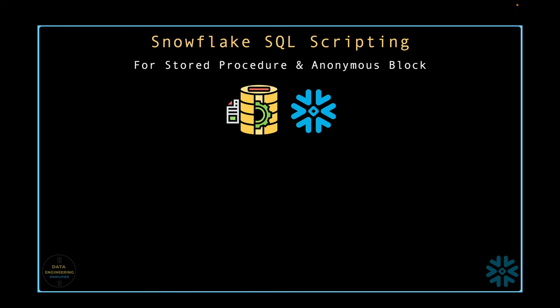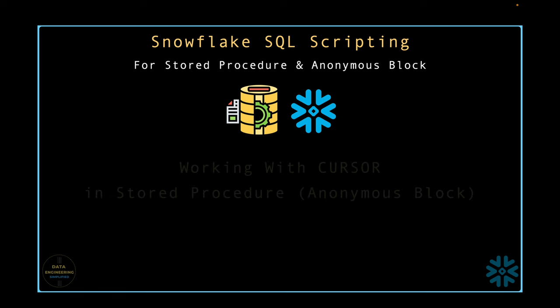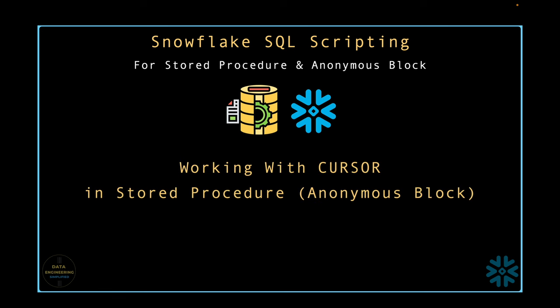The last part of this playlist talked all about looping. This chapter will mainly cover how to work with cursor objects while writing anonymous blocks or stored procedures using Snowflake SQL scripting. We will not just learn the SQL construct, but also take different examples and understand how to debug in case of syntax errors thrown when we try to execute incorrect cursor statements. Stay tuned until the end of this video to gain a comprehensive understanding while working with cursors.